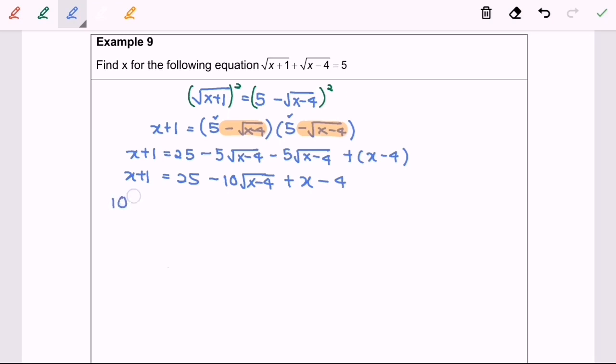10 square root of x minus 4 equals 25 plus x minus 4 minus x minus 1. 10 square root of x minus 4 equals 25 minus 4 minus 1, we will have 20.